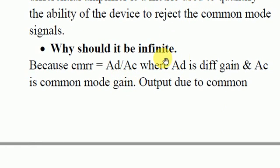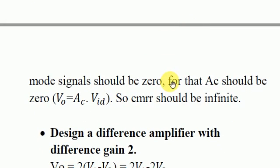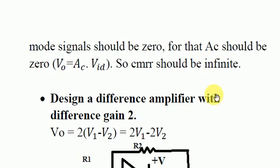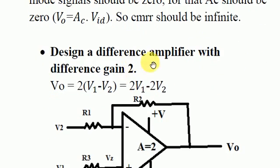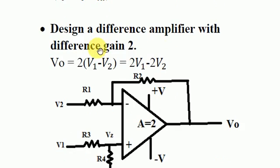CMRR is defined as Ad divided by Ac, where Ad is the differential gain and Ac is the common mode gain. Since output due to common mode signals should be zero, Ac should be zero, and therefore CMRR should be infinite. The last question was to design a differential amplifier with a differential gain of 2.